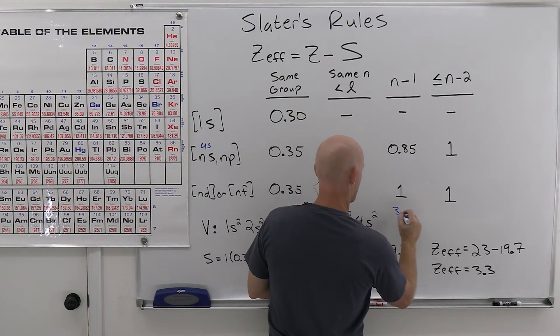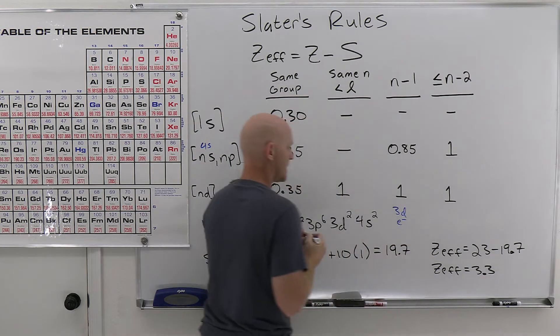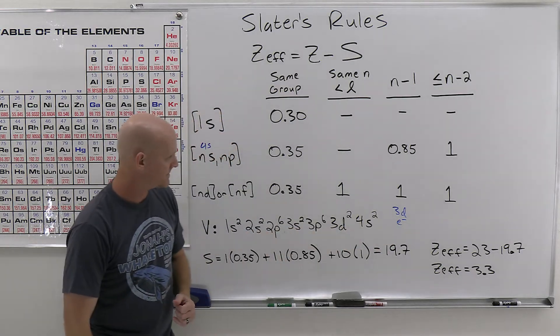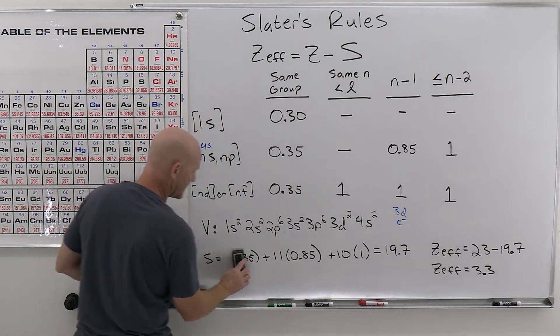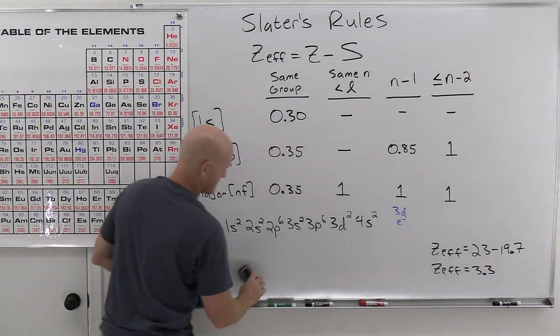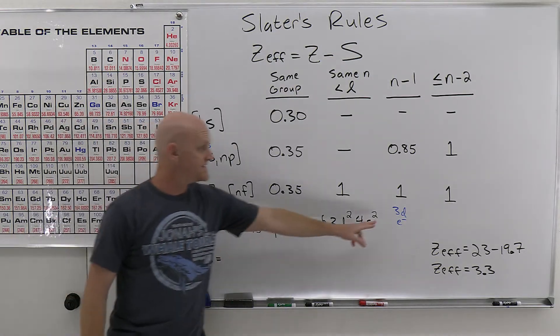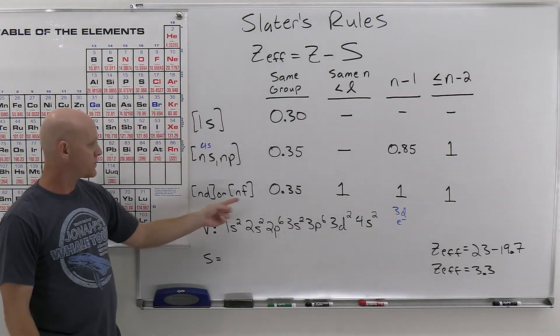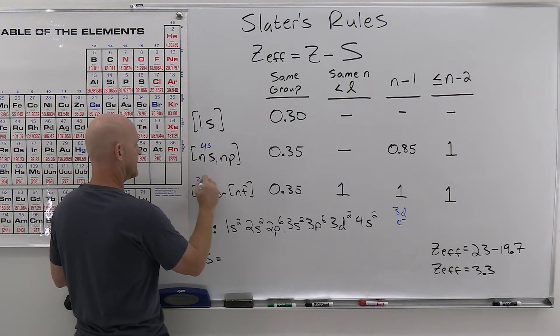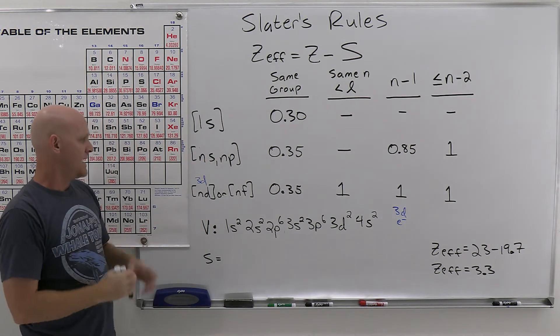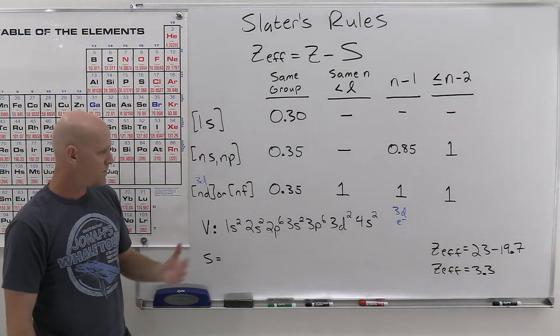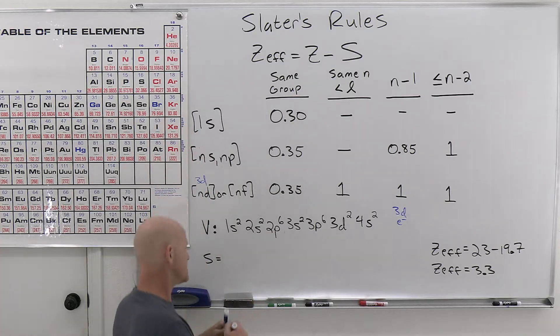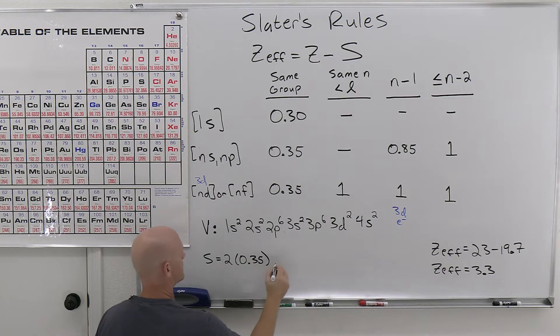And again we're going to see how all the remaining electrons are going to screen the 3d electron I'm examining here. So here's what we got left. And we'll start off with a new calculation for S here. And so now we need to look at, since we're looking at a d electron, we'll be applying the rules down here. And specifically we're looking at a 3d electron now. And if there are any other electrons in the 3d, they're going to contribute 0.35. Well, hey, we have two more that are going to contribute that 0.35. So we'll get 2 times 0.35 plus.